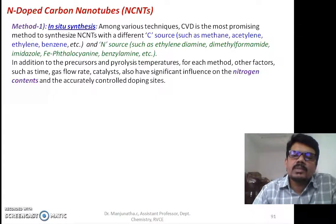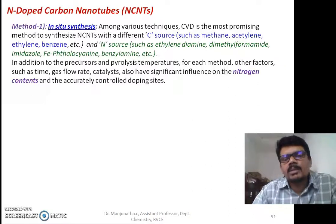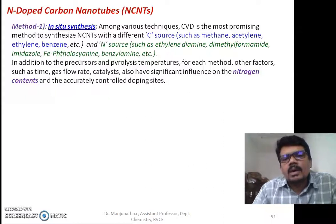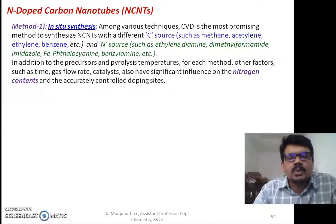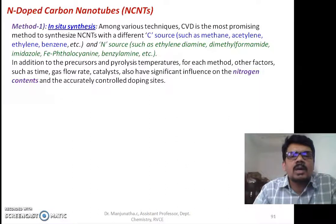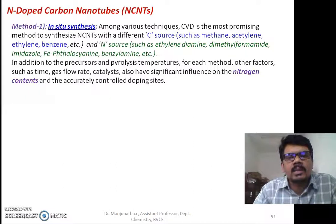This can be done by two methods. Method one is in-situ synthesis, which means we use chemical vapor deposition where we take nitrogen sources like ethylene diamine, dimethylformamide, imidazole, and benzylamine compounds along with carbon sources like methane, ethylene, benzene, or toluene.